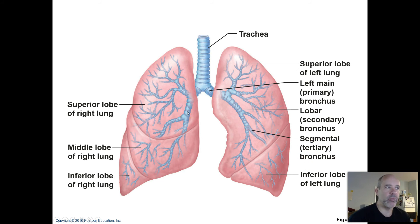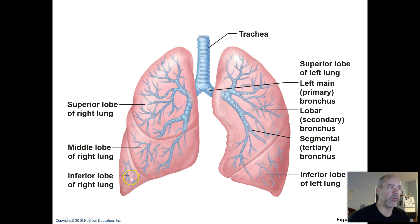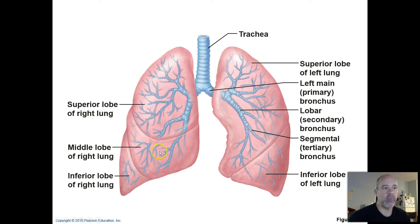Your lungs have different lobes or sections. The left lung only has two: a superior and an inferior lobe. The right lung has three lobes: superior, middle, and inferior. We'll be taking a closer look at that on the anatomy side. Notice your bronchi, even the smaller tertiary ones, still have little cartilage — indicated in blue there — hyaline cartilage rings that help protect them and prevent them from collapsing.